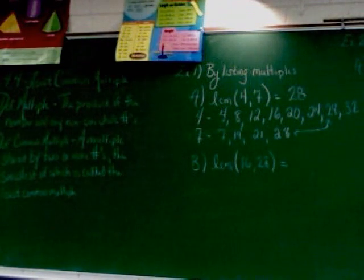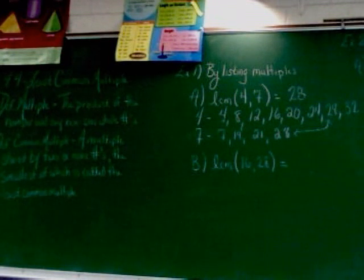In part B, we're finding the least common multiple of 16 and 28. Now, this one's not very much fun because listing the multiples of 16 and 28 is kind of a pain.